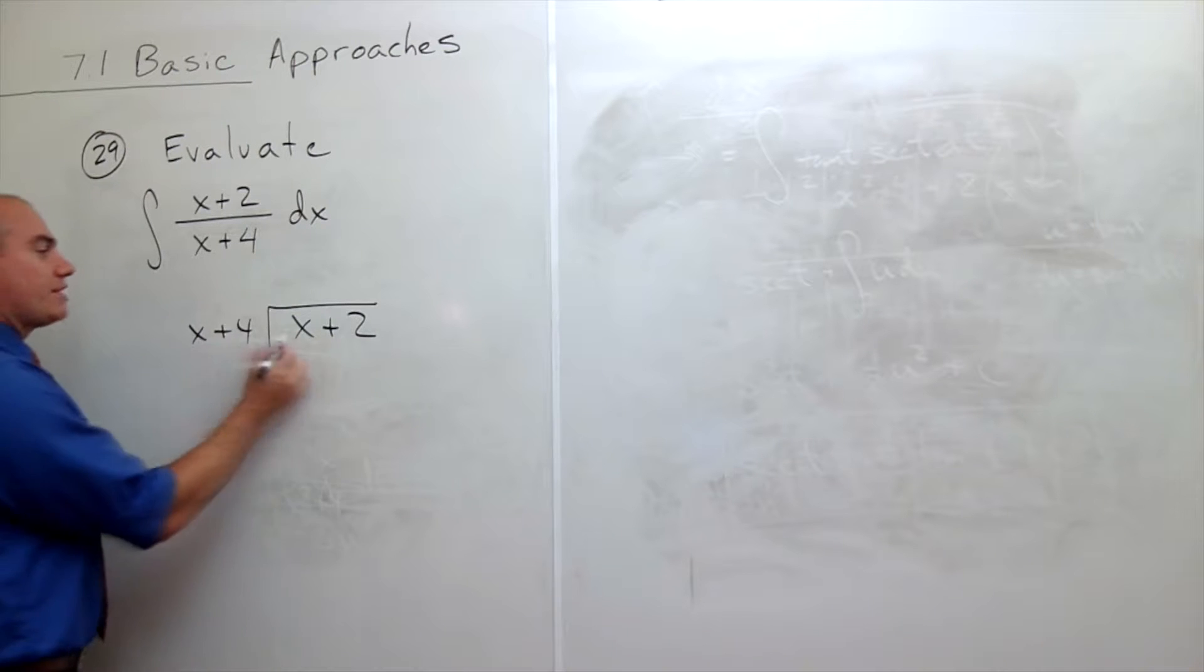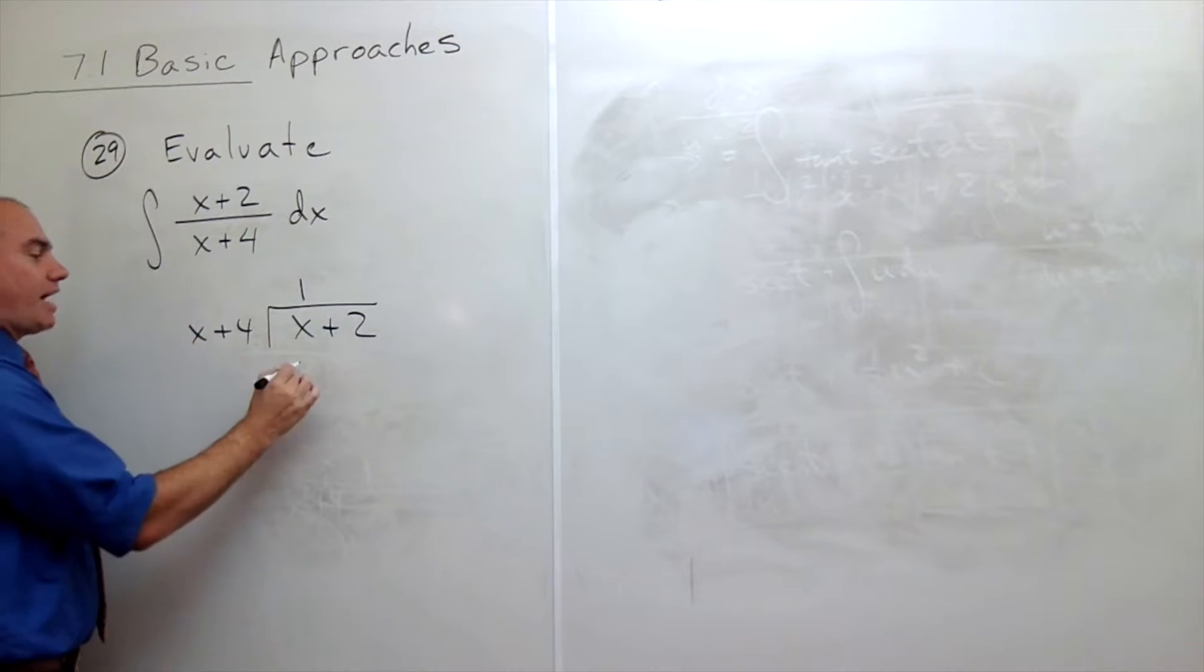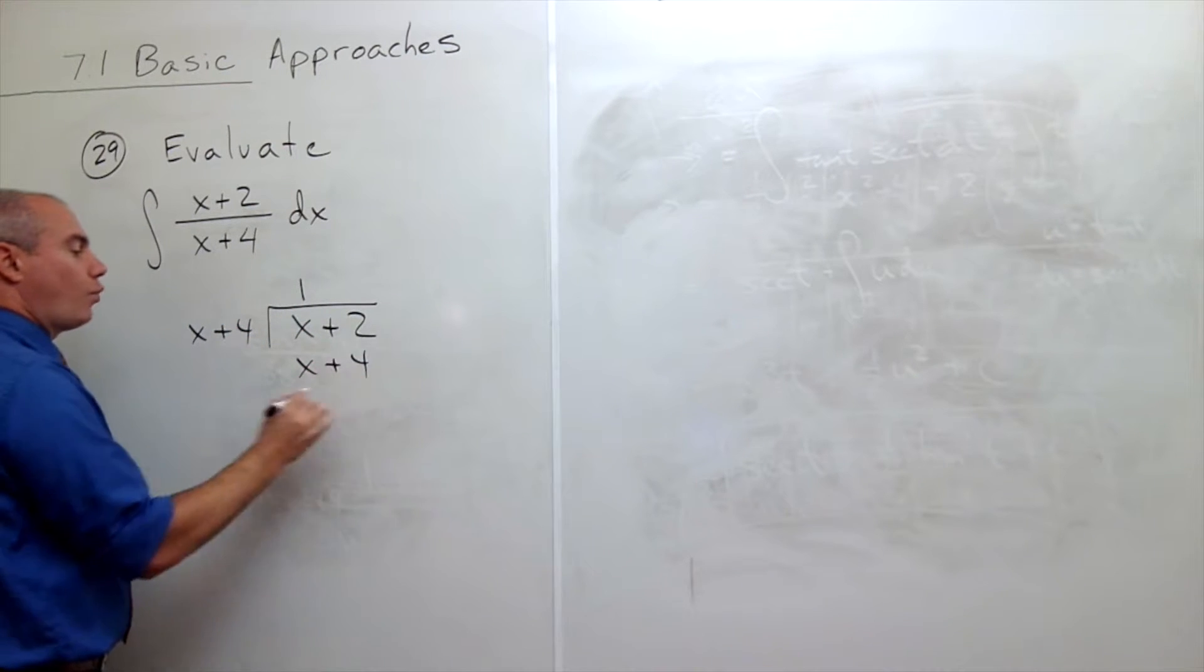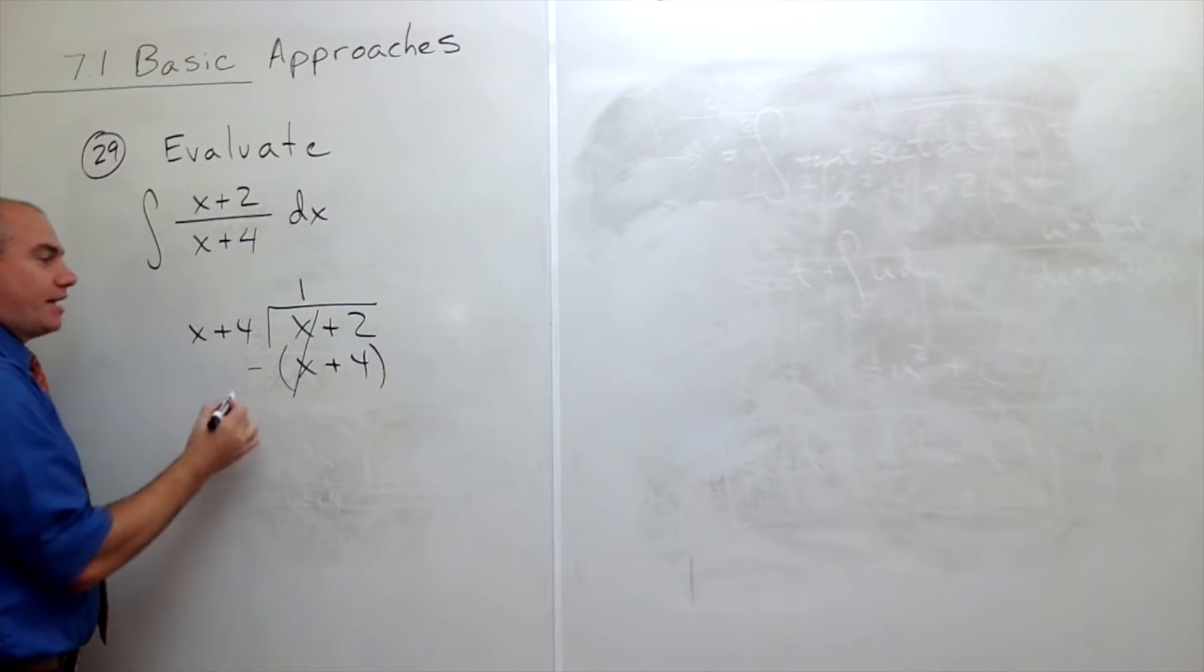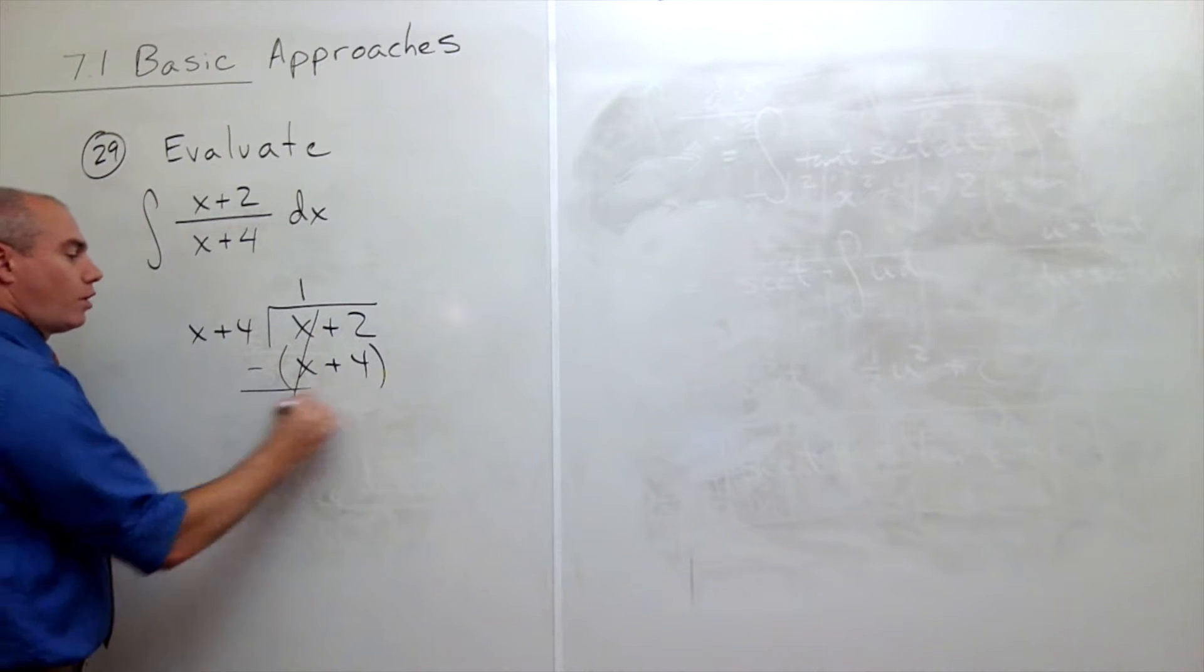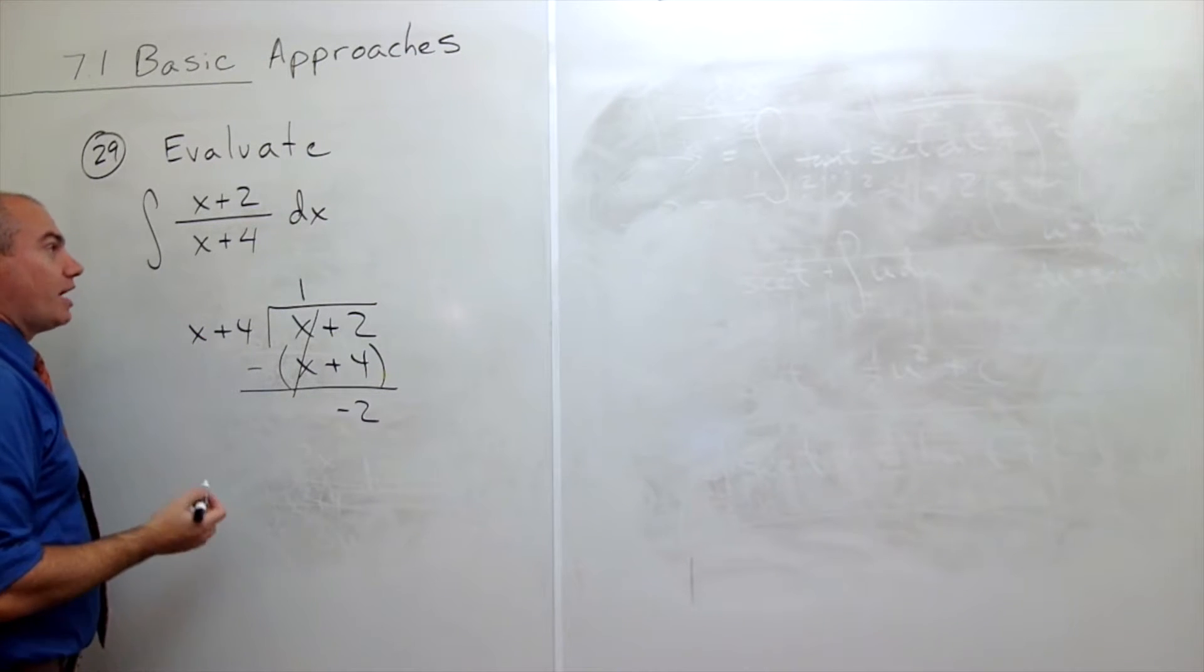So how many times does x go into x? It goes in one time. One times x is x. One times 4 is 4. Then I want to subtract all of that. The x's cancel, and 2 minus 4 is negative 2. X does not go into negative 2, so I'm done.